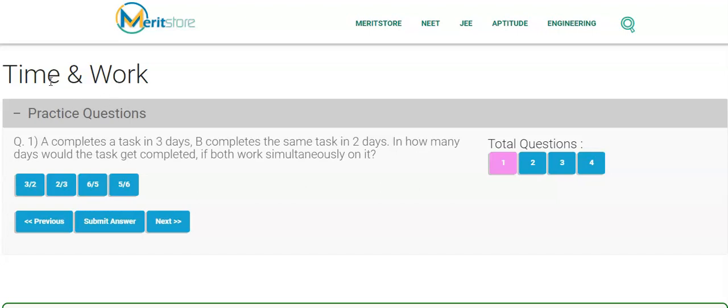Let's start. Let's look at the first question. A completes the task in three days, B completes the same task in two days. In how many days would the task get completed if both work simultaneously on it? The simple thing to do here is calculate how much they can do in a single day.